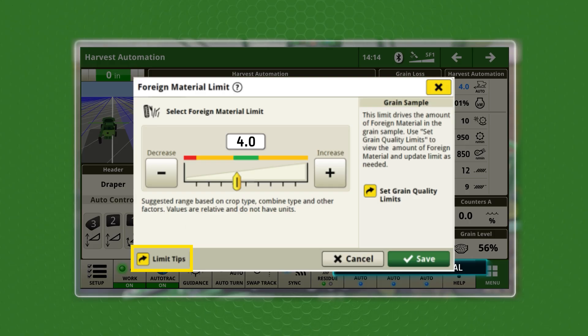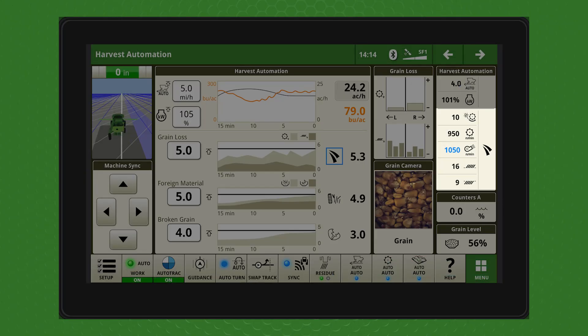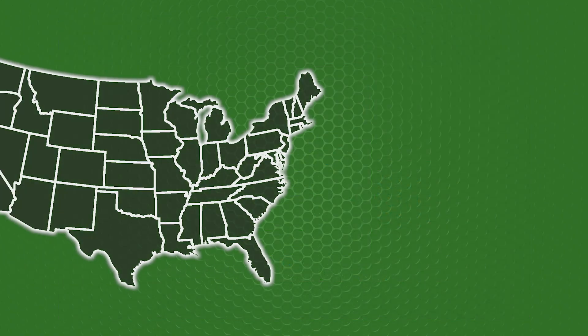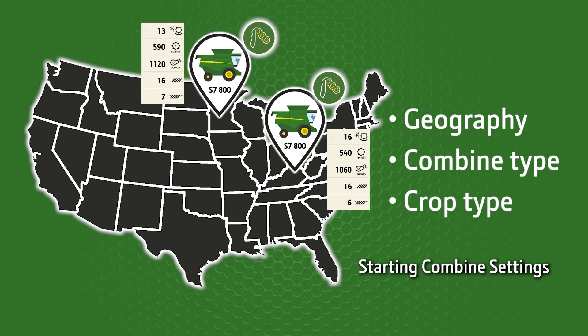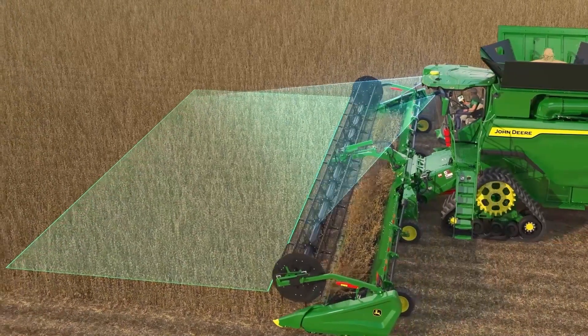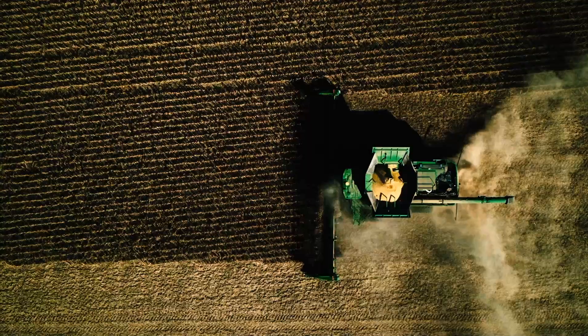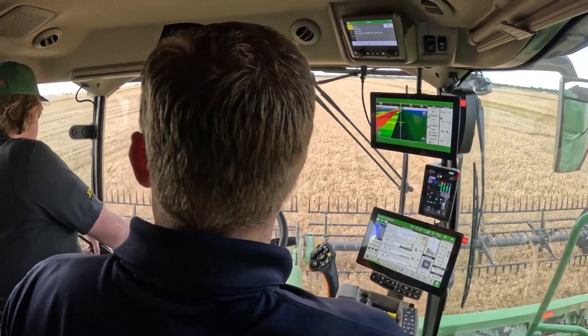Please refer to the limit tips window for more user guidance. Harvest Settings Automation also leverages fleet harvesting data to provide starting combine settings based upon geography, combine type, and crop type. No longer does an operator need to invest significant time to set a performance target before enabling automation. With this preset setting logic incorporated, operators will realize desired grain quality results much sooner as the combine begins in a ready configuration from the start, based upon the user-defined setup inputs from the display. This starting baseline from fleet data will also continue to get more precise each season.